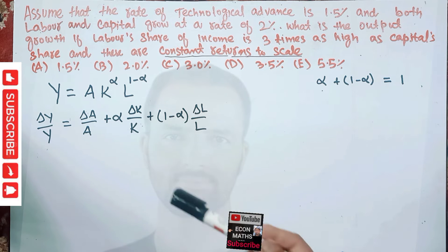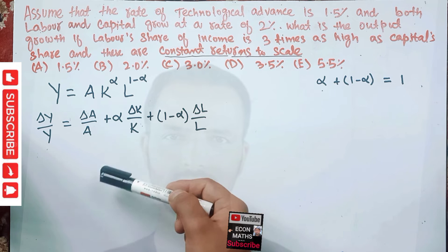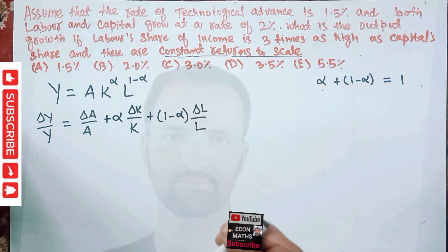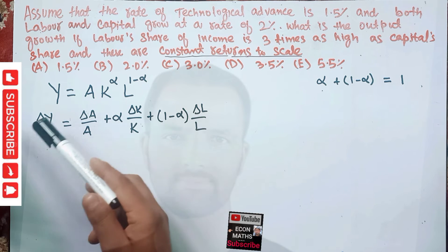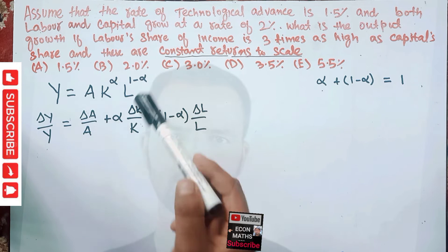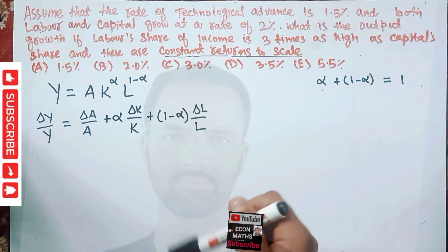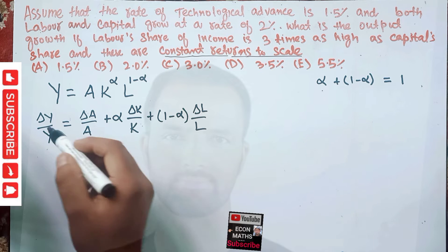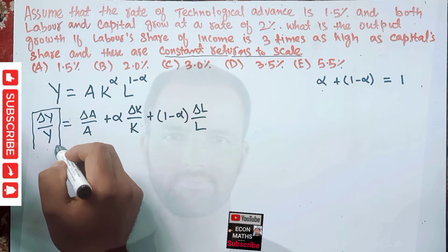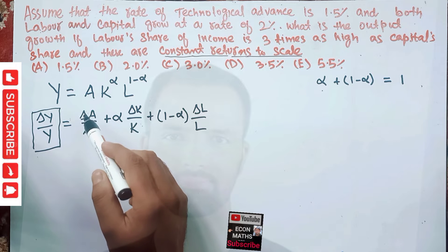I derived this equation in an earlier video — I will provide the link in the description and in the info button. So I will not derive it again here. What we need to find is this growth rate of output. The growth rate of technological advance, also called Solow's residual, is 1.5%.